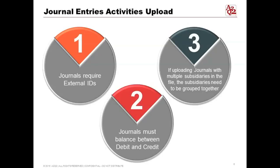Journal entries must balance between debits and credits — that sounds simple, but it gets tricky. When you export data from another ERP into Excel, numbers can extend beyond two decimal points. For example, an item priced at $1.10 may actually be 1.1023 in the system. Those extra digits matter: even a hundredth or thousandth of a decimal point out of balance will cause the upload to fail, and we've spent a lot of time tracking down that one mismatched cell.